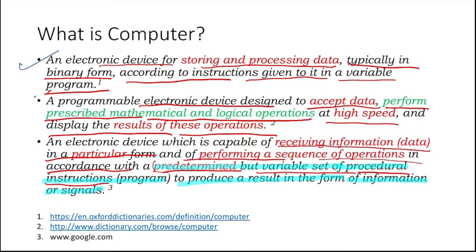If you look across all three definitions, what are they saying? They are all saying that the computer is an electronic device — sometimes called a programmable device — which can receive information or data.